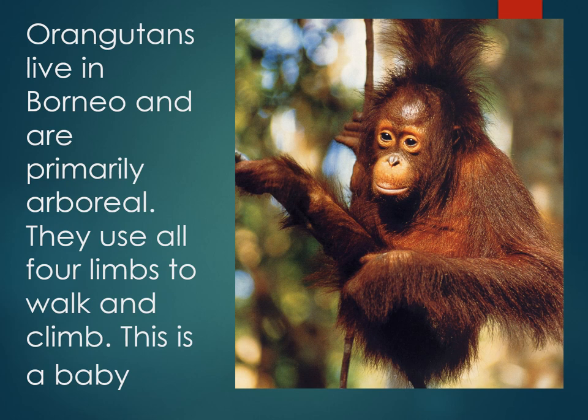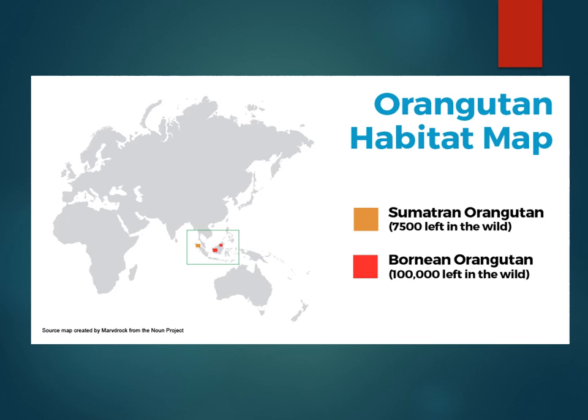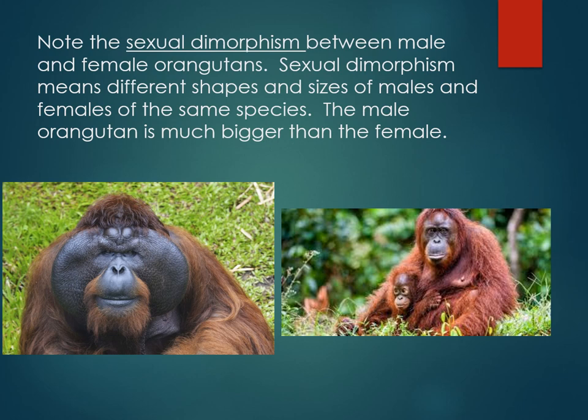Orangutans live in Borneo and are primarily arboreal. They use all four limbs to walk and climb through the forest. Note the sexual dimorphism between male and female orangutans — sexual dimorphism means different shapes and sizes of males and females of the same species. The male orangutan on the left is much bigger than the female on the right.